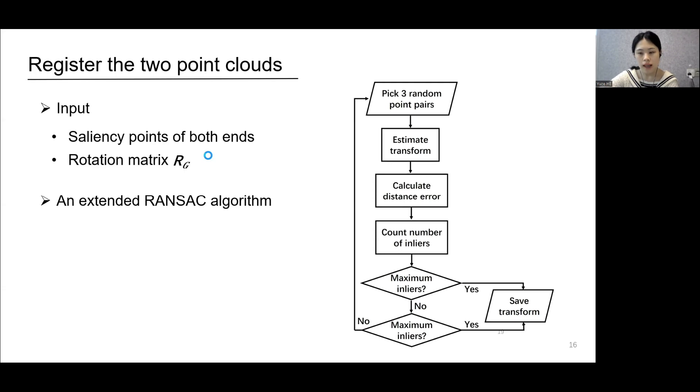First, each saliency point has two labels, semantic label and primitive label. When picking point pairs, we only match two saliency points that have the same two labels, which narrows the search space of corresponding saliency points.